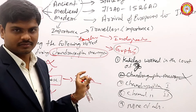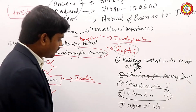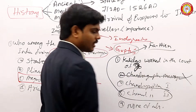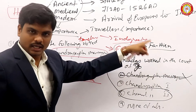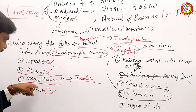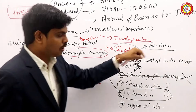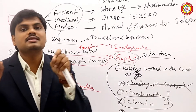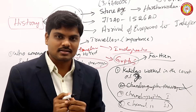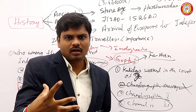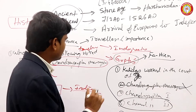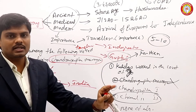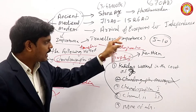During Chandragupta II itself, one of the Chinese travelers visited India: Fahiyan. He is important. So Megasthenes is one traveler, Fahiyan is one traveler, and one more traveler is there — during Harsha's reign, it was Xuanzang. If you refer carefully, there would be only 5 to 10 travelers of importance in the history area. That area you need to cover.